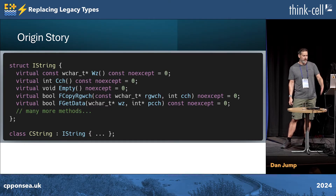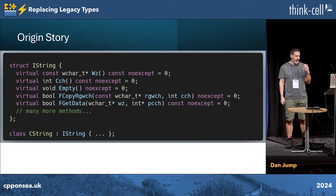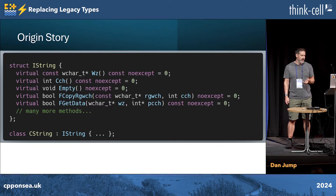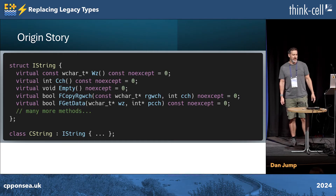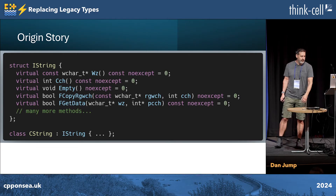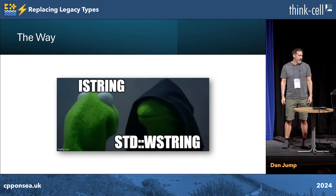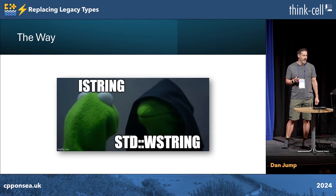It has a whole slew of methods on it. A lot of Hungarian notation — so 'wz' is like a wchar that's null-terminated, 'cch' is count of chars, and so on. There's an interface and then a concrete class that has all the details. The way here is that we want istring to basically look like std::wstring, and then just do a bulk switch out at the end.